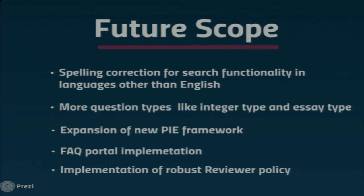The future scope of the Ikshiksha project includes: spelling correction for search functionality in languages other than English (currently English only); more question types like integer and essay type; expansion of the new PIE framework; an FAQ portal implementation (documentation is done, portal yet to be built); and implementation of a robust reviewer policy, which is still under construction.